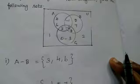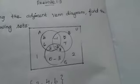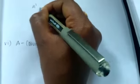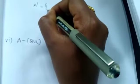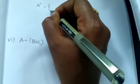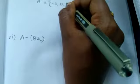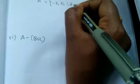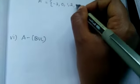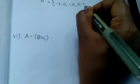Now next we are going to do the next sum, A dash union B dash. Now from the figure you say A dash equals, the elements which are not in A we want to write: minus 3, 0, 1, 2, 5, 7, 8.